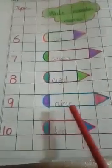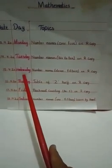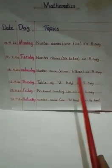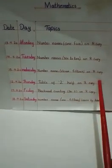Help your child in writing and learning these number names. Now I guide you about 15 April Wednesday: numbers names 11 to 15 on rough copy.